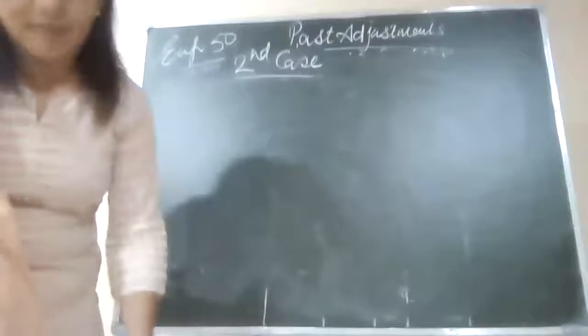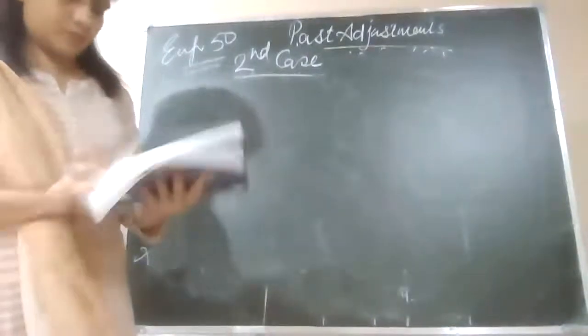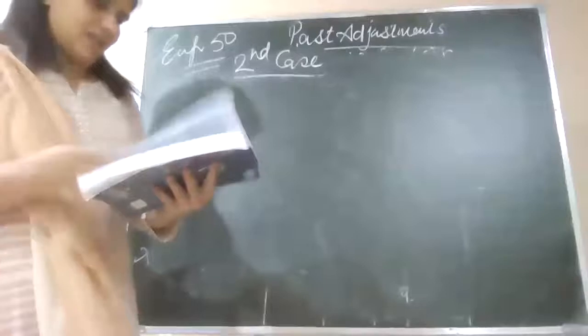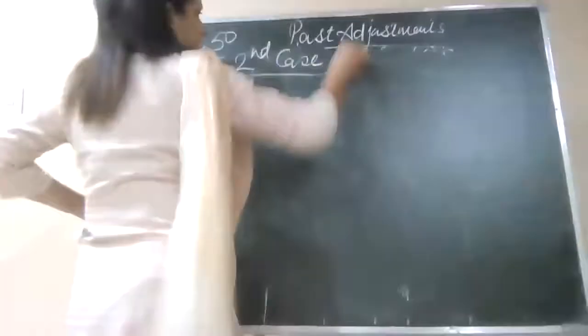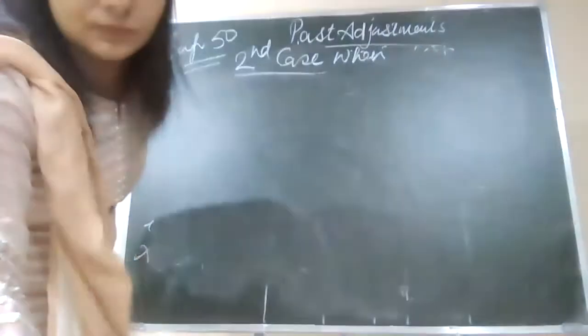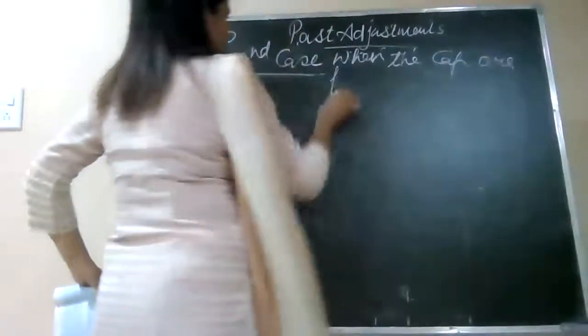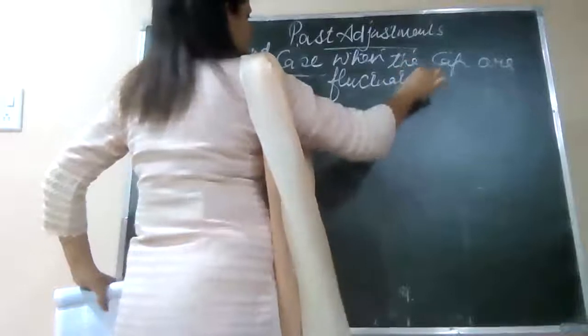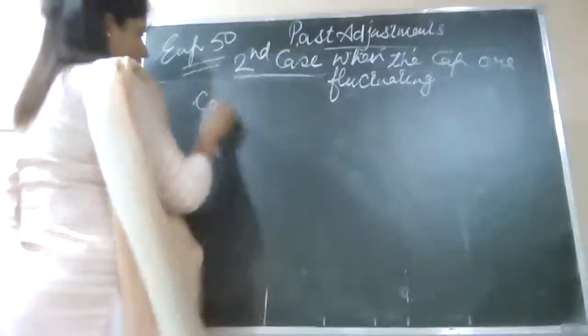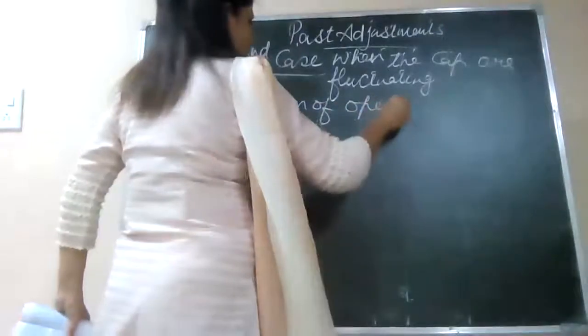In the second case, when the capitals are fixed, in the closing capital whatever is given in the equation — closing capitals are 10,125 and 0,000. When the capitals are fluctuating, we have the calculation of opening capital.